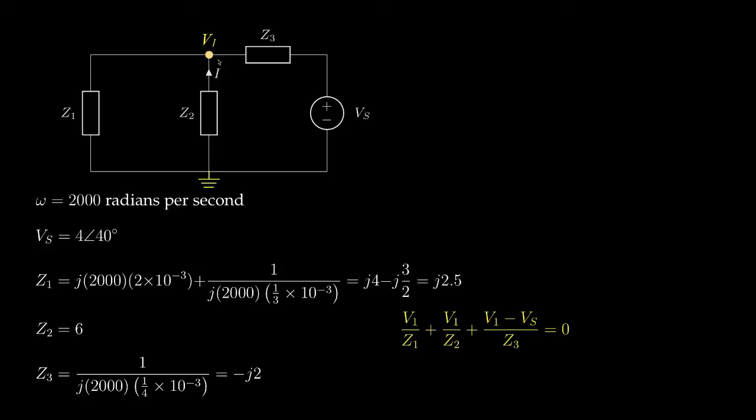If I apply Kirchhoff's current law at this node, I'll get this following equation. We'll have the current flowing out through this path is V1 minus 0 divided by Z1. The current in this direction is V1 minus 0 divided by Z2. And the current in this direction is V1 minus VS divided by Z3. And all of those currents must sum to 0, so I come up with this equation. I can then solve this equation for V1 and then use that node voltage V1 to solve for the current I, which would be, since it's flowing in this direction, it would be 0 minus V1 or negative V1 divided by Z2.